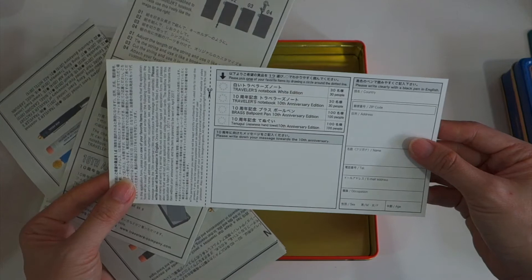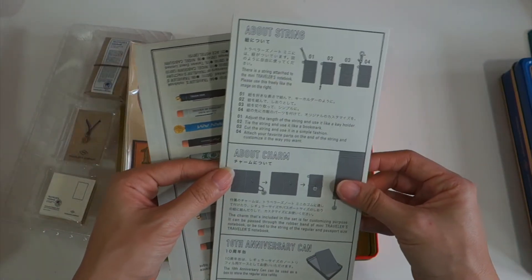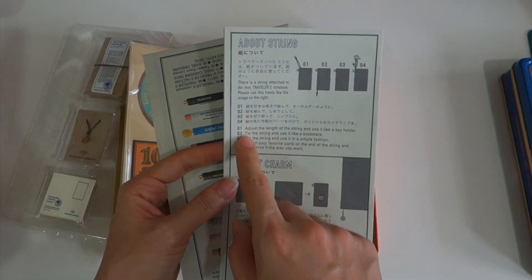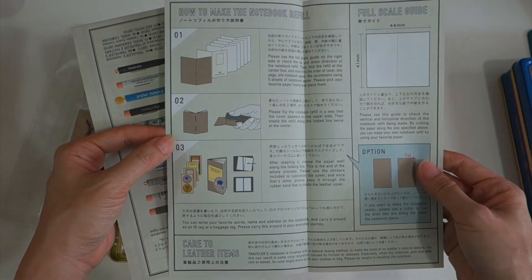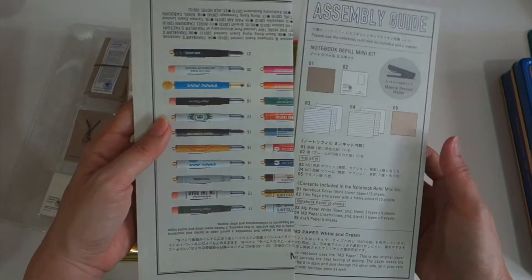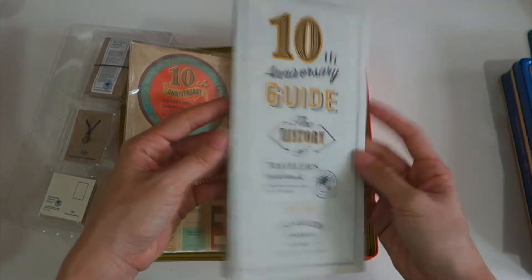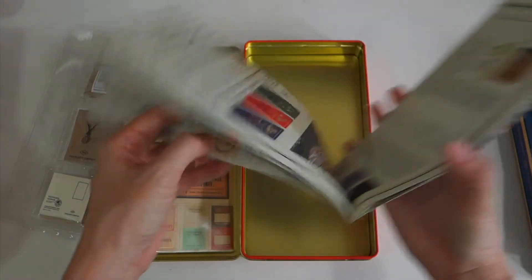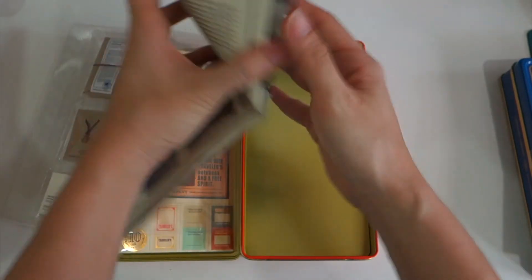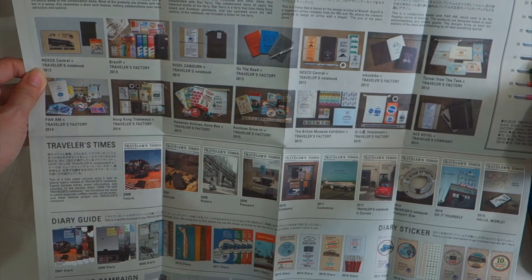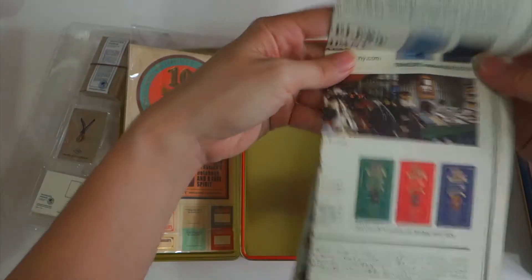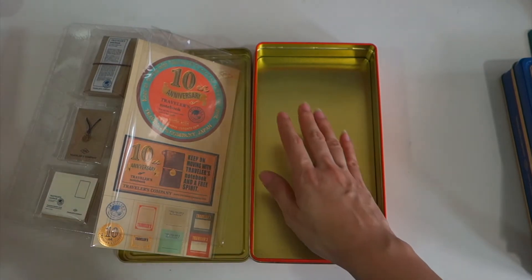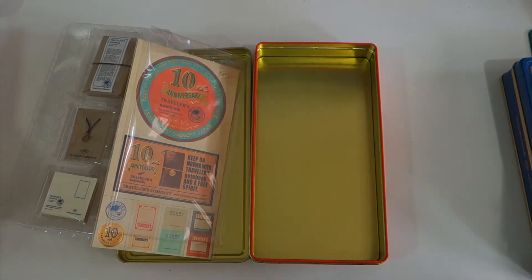They will tell you about the string and about the charm and the can and all this stuff, so I can read it later. This is some other accessories of my Traveler's Notebook. Oh there are collections, very nice. So this is the tin, and the tin you can fit the Traveler's Notebook inside.